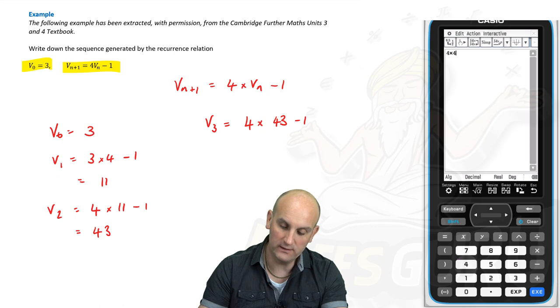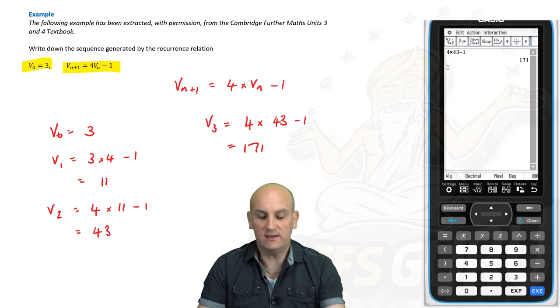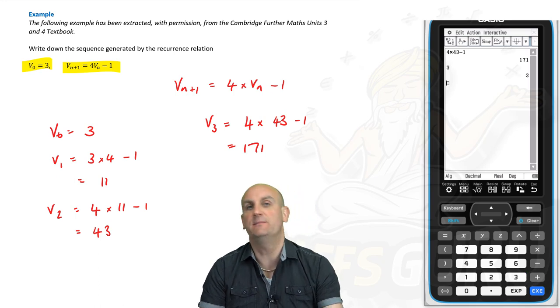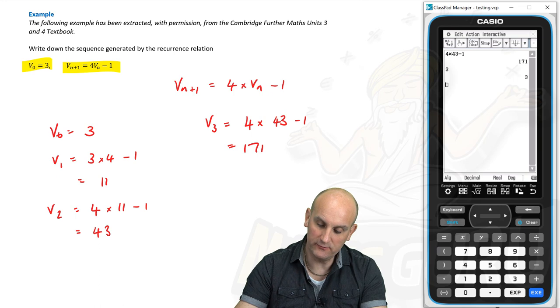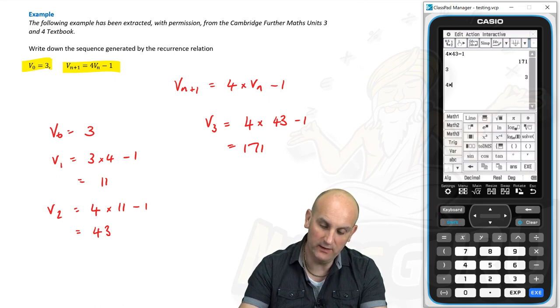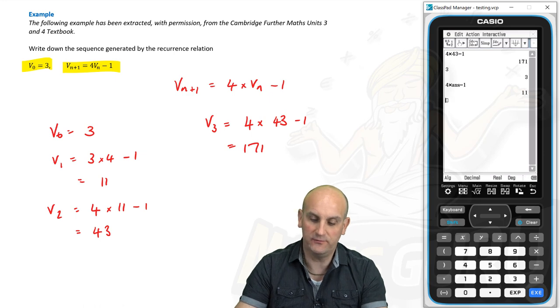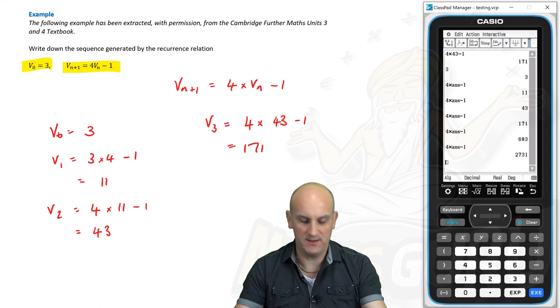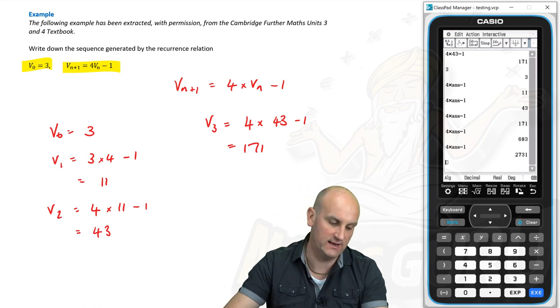And then V_3 would in that case be 4 × 43 - 1, which gives me 171. Now yes, I can use my calculator for this. All we need to do is put the start term in and press EXE and that's going to remember what my previous value is. To get to my next value I'm going to do 4 times my previous answer which is ANS on my calculator and subtract 1. Now believe it or not, that's now going to create all of my sequence for me. So 11, yep, 43, yep, 171, and all I'm doing is just hitting EXE every single time. So there we go, that's how you can use your calculator to do it. In an exam they'd probably ask you to do the next three numbers in the sequence.